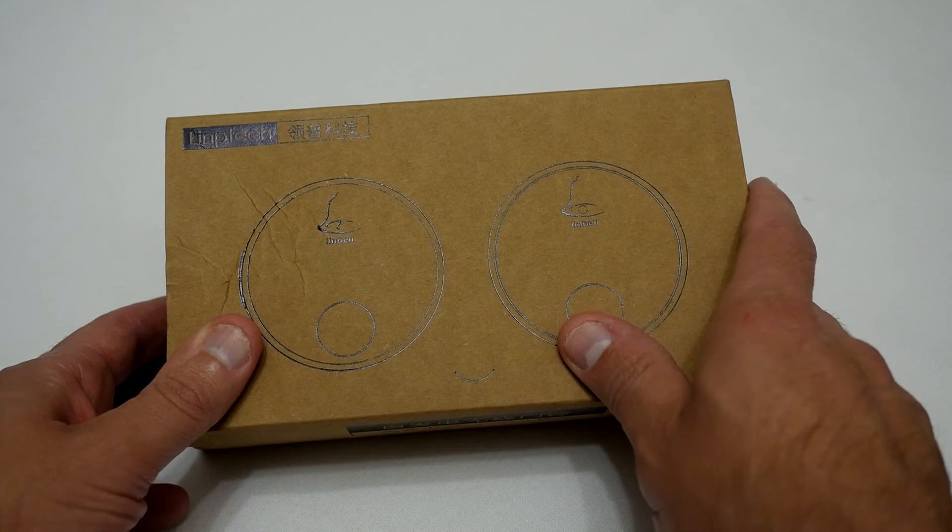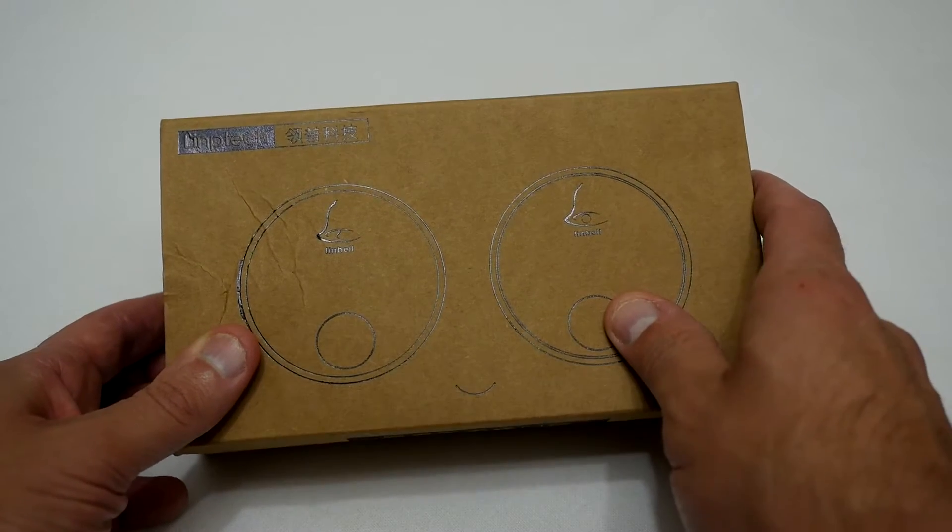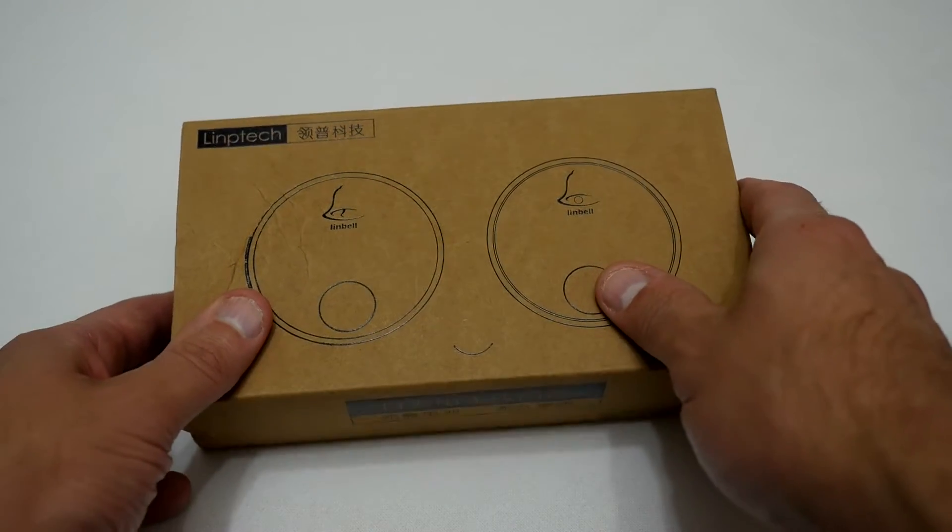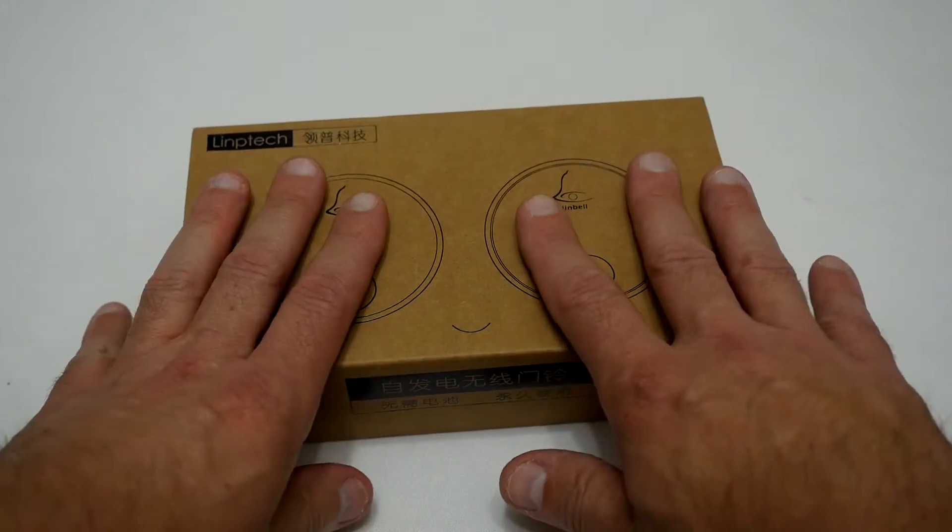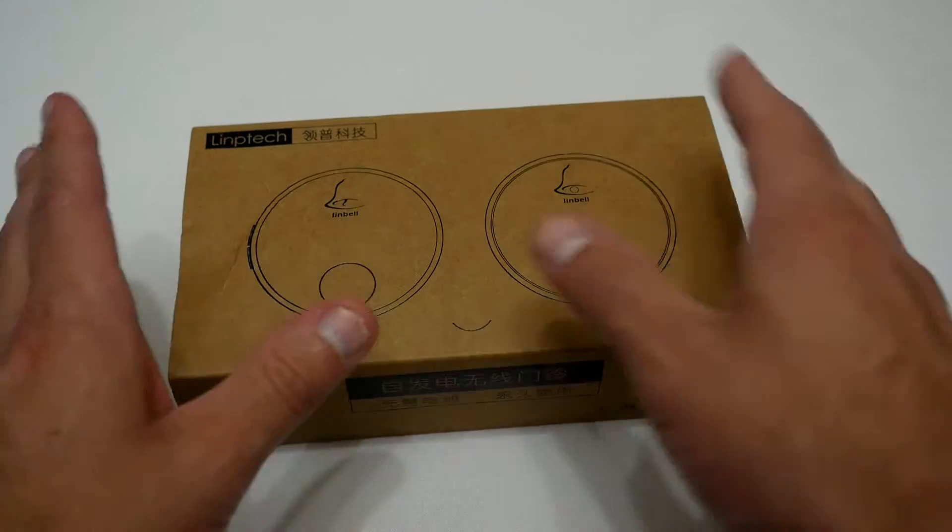Now this particular one comes from Limtec and it's a Chinese one, so basically I'm going to show you what you've got in the box and then I'll show you it up on the wall when I've finished installing the unit. So anyway let's get in the box and see what we've actually got in here.